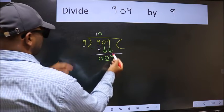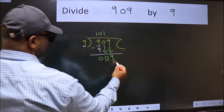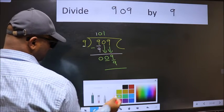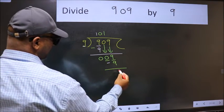Now 9. When do we get 9 in 9 table? 9 once 9. Now we should subtract. We get 0.